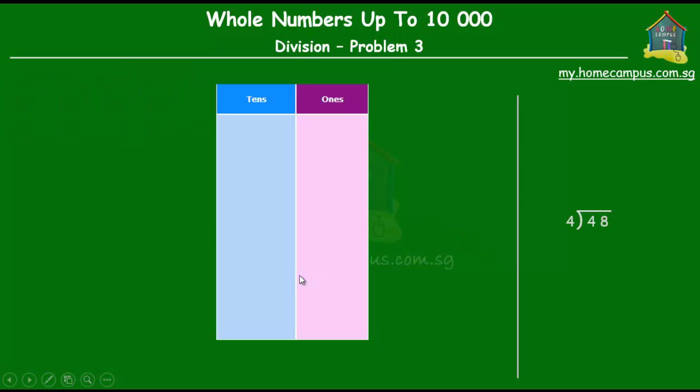Okay, so we have to actually find out what 48 divided by 4 is equal to. Let's do that. In the middle of the screen, we'll see how division actually happens using our building blocks. And on the right side of the screen, we'll see the working.